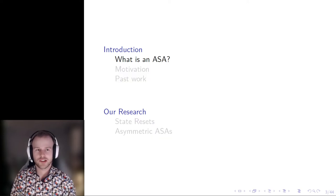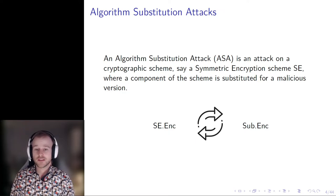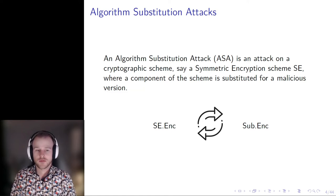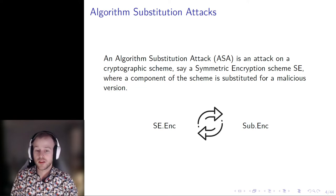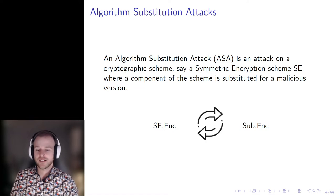So firstly, what is an ASA? An algorithm substitution attack, or ASA, is an attack on a cryptographic scheme — say a symmetric encryption scheme SE — where a component of the scheme is substituted for a malicious version. This model broadly captures what might happen if the attacker is able to substitute the secure algorithm a user intends to use for another algorithm of the attacker's choice. In our case, we are mostly going to consider symmetric encryption specifically. The encryption function SE.enc is being substituted with an algorithm SUB.enc, which will run instead on every invocation. We call SUB.enc the subverted encryption algorithm.